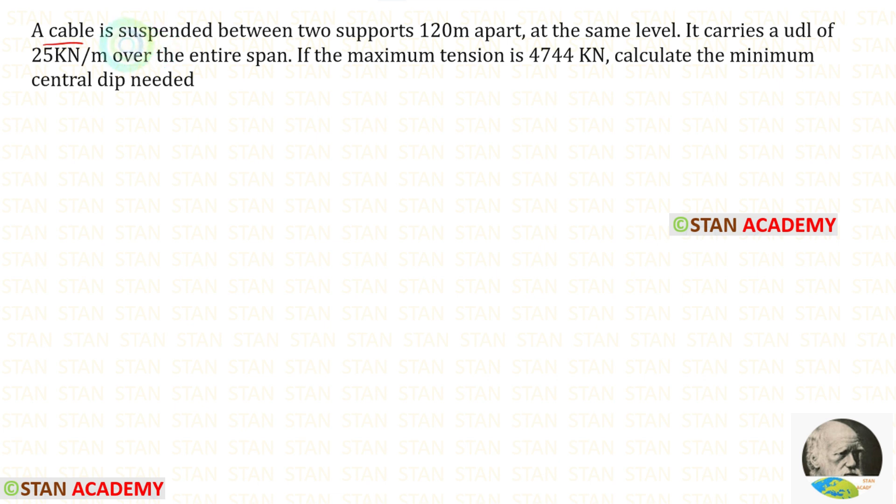A cable is suspended between two supports 120 meter apart at the same level. It carries a uniformly distributed load of 25 kilo Newton per meter over the entire span. If the maximum tension is 4744 kilo Newton, calculate the minimum central dip needed.